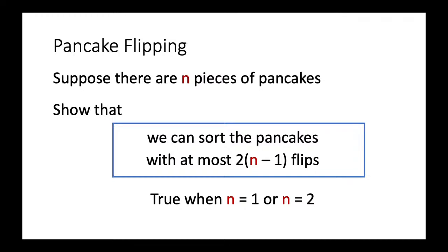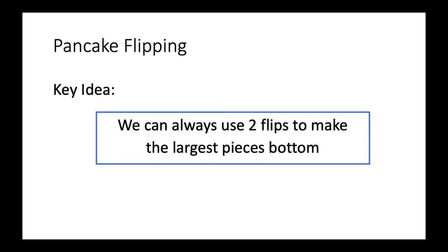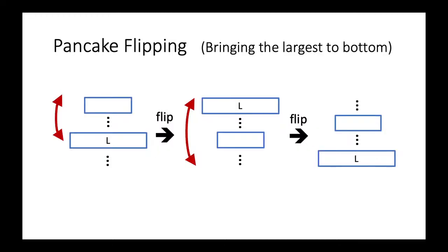A clever observation is this: we can always use two flips to make the largest piece go to the bottom. Let's say L represents the largest pancake in the current arrangement.